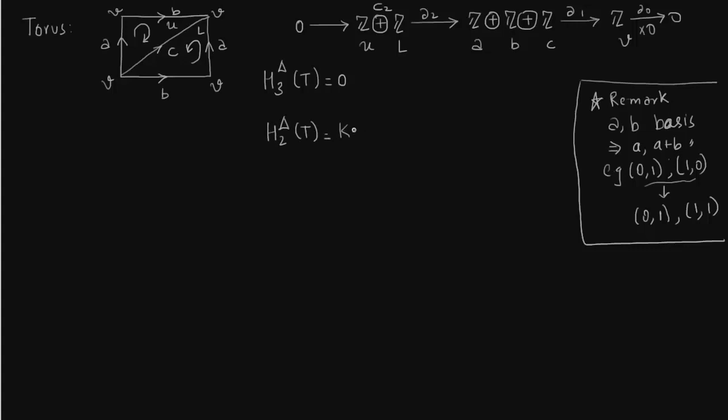What about 2? Now as you see, image of delta_3 is essentially zero because there is nothing coming in. So H_2, which is kernel over image, will just be the kernel of delta_2, because image of delta_3 is zero. Then H_2 is kernel of delta_2 over image of delta_3.